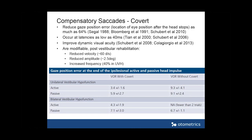Gaze position error is simply the difference between the target and the eye after the head is moved. So if the right vestibular system does not work and we turn the head to the right, the vestibulo-ocular reflex will not keep the eyes stable on the target. After we stop the head rotation, the eye will be off target, and that difference between where the eye is after the head has stopped moving and where the target is — that is gaze position error.